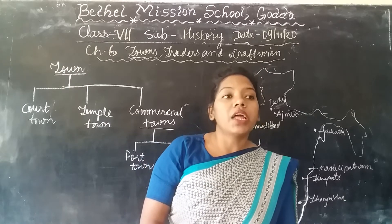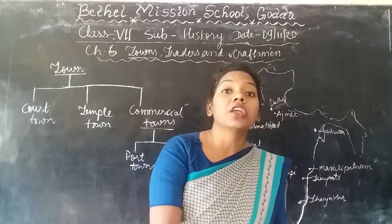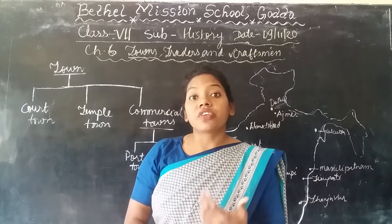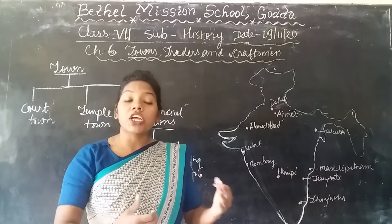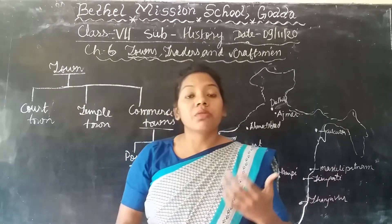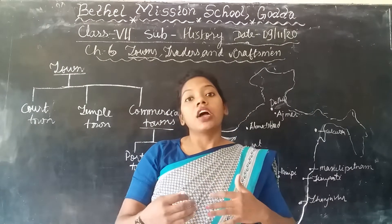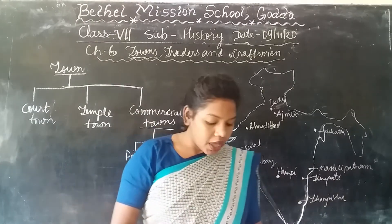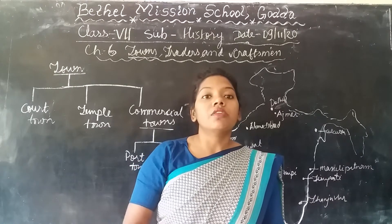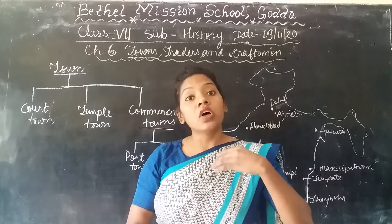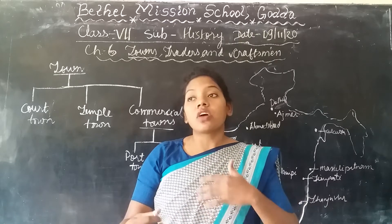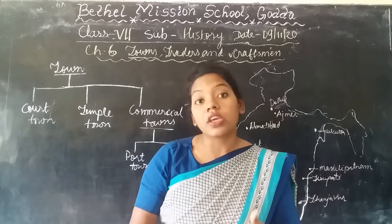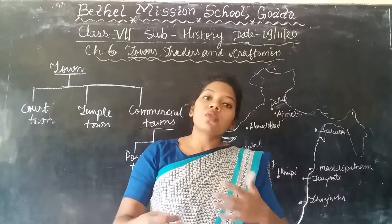During that time there were various developments happening within their own administrative centers, the towns. We can say that trade and commerce flourished during the reign of the Delhi Sultans and the Mughal Empire — like trade connections between European countries and Arab countries. These are the trade connections which were built during the reign of these rulers. There were various traders who travelled from one place to another.